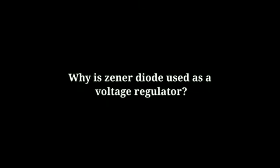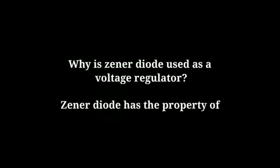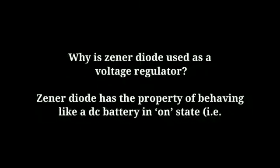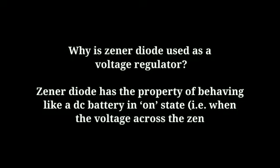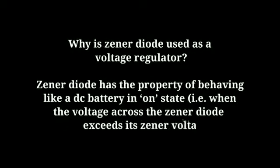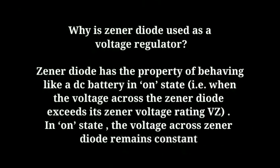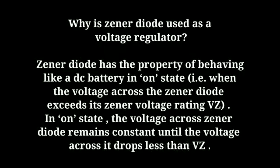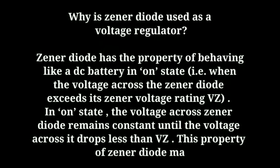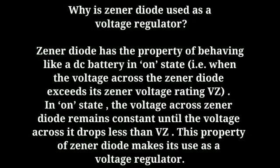Why is a zener diode used as a voltage regulator? A zener diode has the property of behaving like a DC battery in the on state — when the voltage across the zener diode exceeds its zener voltage rating. In the on state, the voltage across the zener diode remains constant until the voltage drop across it falls below the zener voltage. This property makes the zener diode useful as a voltage regulator.